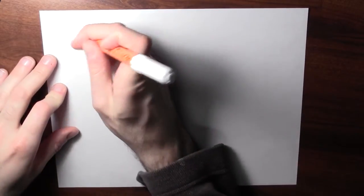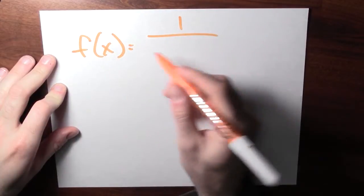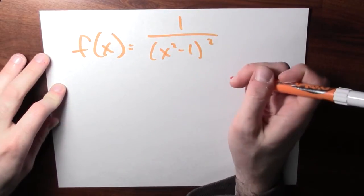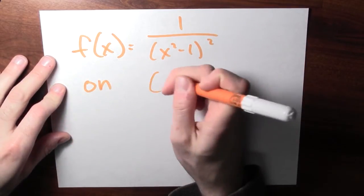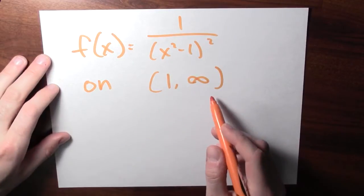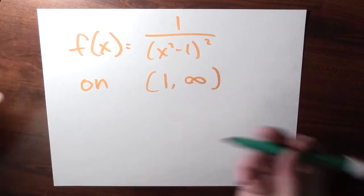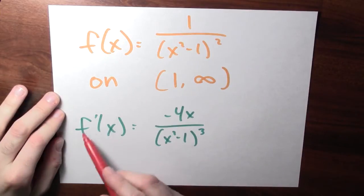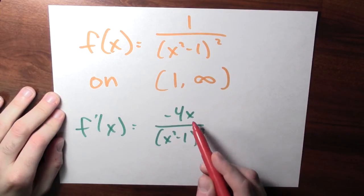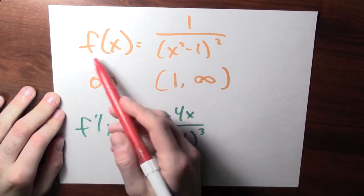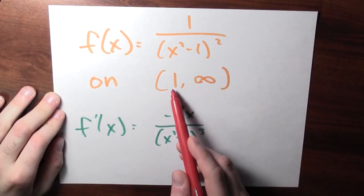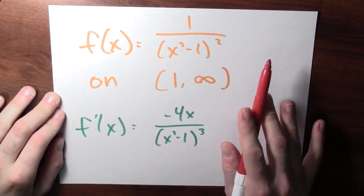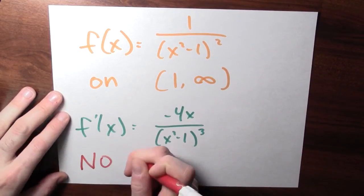It's important to emphasize that the domain truly matters. What if I asked for maximum and minimum values of the same function, f of x equals 1 over (x squared minus 1) squared, but on a different domain — the open interval from 1 to infinity? We start by differentiating: the derivative is still minus 4x over (x squared minus 1) to the third power. The only place the derivative equals 0 is x equals 0, which is not in this interval, so there are no critical points.